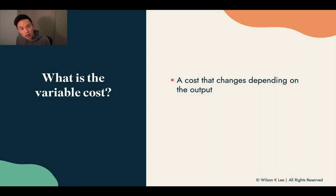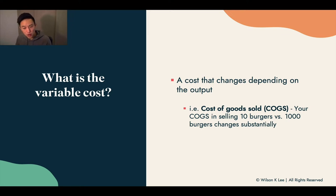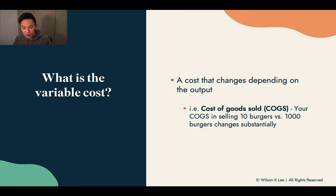What is the variable cost? It is a cost that changes depending on your output. For example, cost of goods sold is a variable cost. Depending on how many units you sell — if you were to sell 10 burgers, your cost of goods sold, the ingredient cost to produce 10 burgers, would be substantially different if you were to produce 1,000 burgers. You need to buy 990 more buns, more burgers, more sauces and everything. That's the reason why the ingredient cost, also known as cost of goods sold, will change substantially depending on the output — how many burgers you sell.